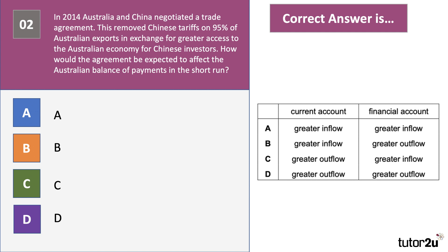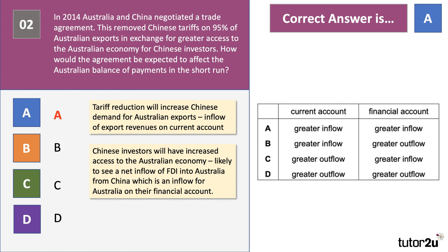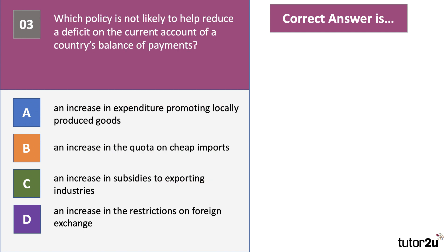This trade deal lowered or removed Chinese tariffs on Australian goods, so you'd expect the Australian current account to improve as exports improve. The correct answer is A. The tariff reduction will increase Chinese demand for Australian exports, which is an inflow of export revenue on the current account. Chinese investors will also have increased access to the Australian economy, likely producing a net inflow of FDI into Australia — a credit item on the financial account. So the answer is A.